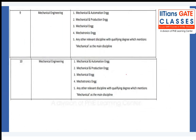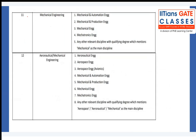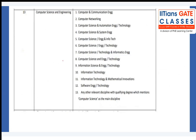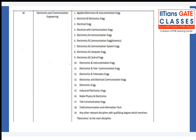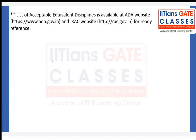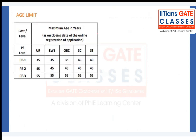The complete list of acceptable equivalent disciplines is available on the ADA website and the DRDO/RSC website. Candidates should refer to those for the full and updated list of eligible disciplines across all serial numbers.